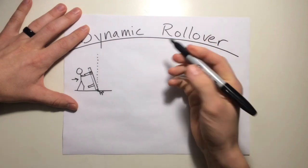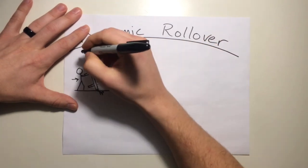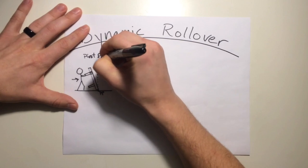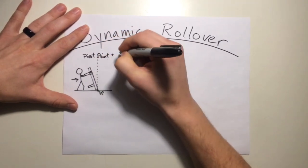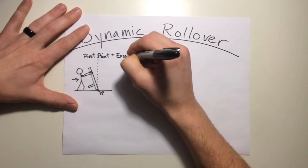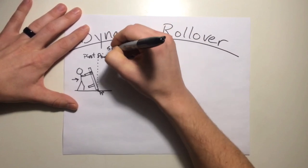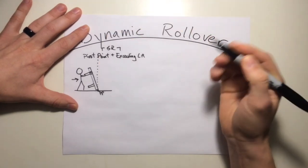Alright, so in this situation right here, we have a pivot point. And we have an exceeding of the critical angle. And that makes up a static rollover condition.